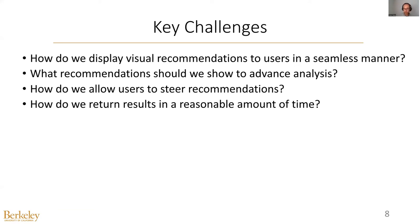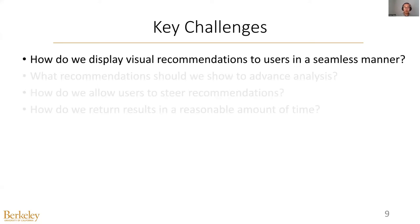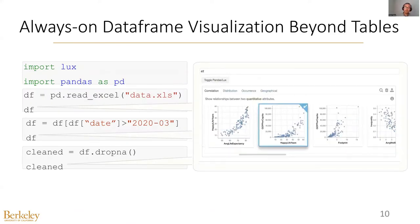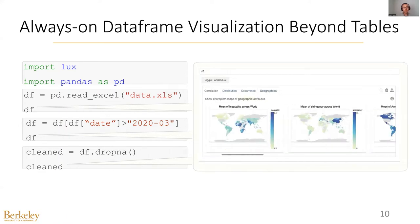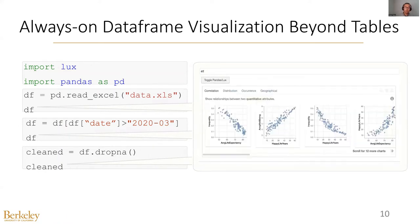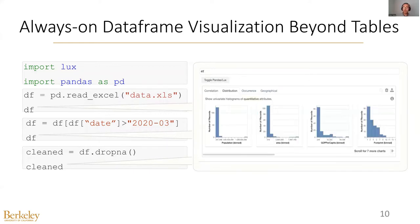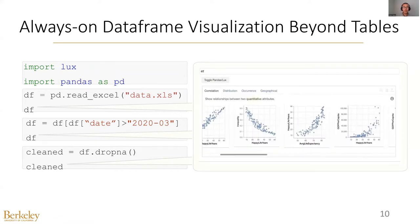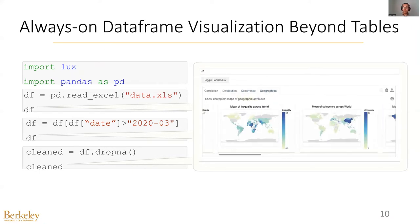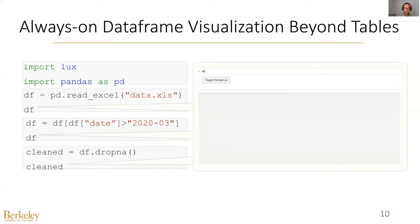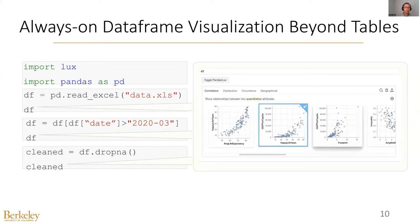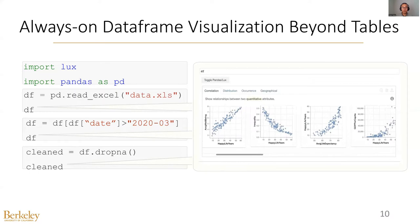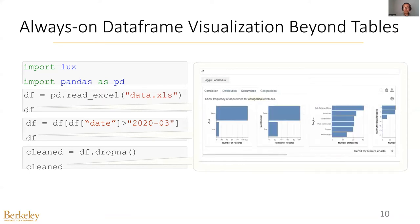First, I want to start with how to display visual recommendations in a seamless manner. LOCKS adopts an always-on framework that recommends visualizations at any point of the workflow. Whenever users print out a DataFrame, LOCKS will recommend visualizations at the same time. It provides an alternative view to the original table view from Pandas, such that users can switch back and forth between the two different views. Sometimes the table view is more useful because users want to understand the structure of the DataFrame, and in other cases LOCKS could be more useful because it provides visual insights into the data.